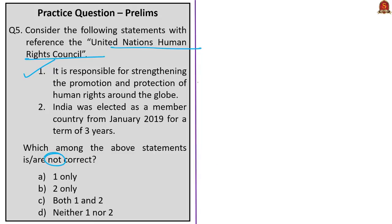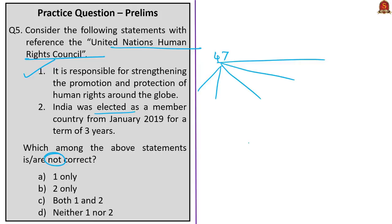The second statement: India was elected as a member country from January 2019 for a term of three years. This statement is correct because the council is made up of 47 member states including India, from January 2019 for a term of three years. The council's membership is based on equitable geographical distribution across five areas.